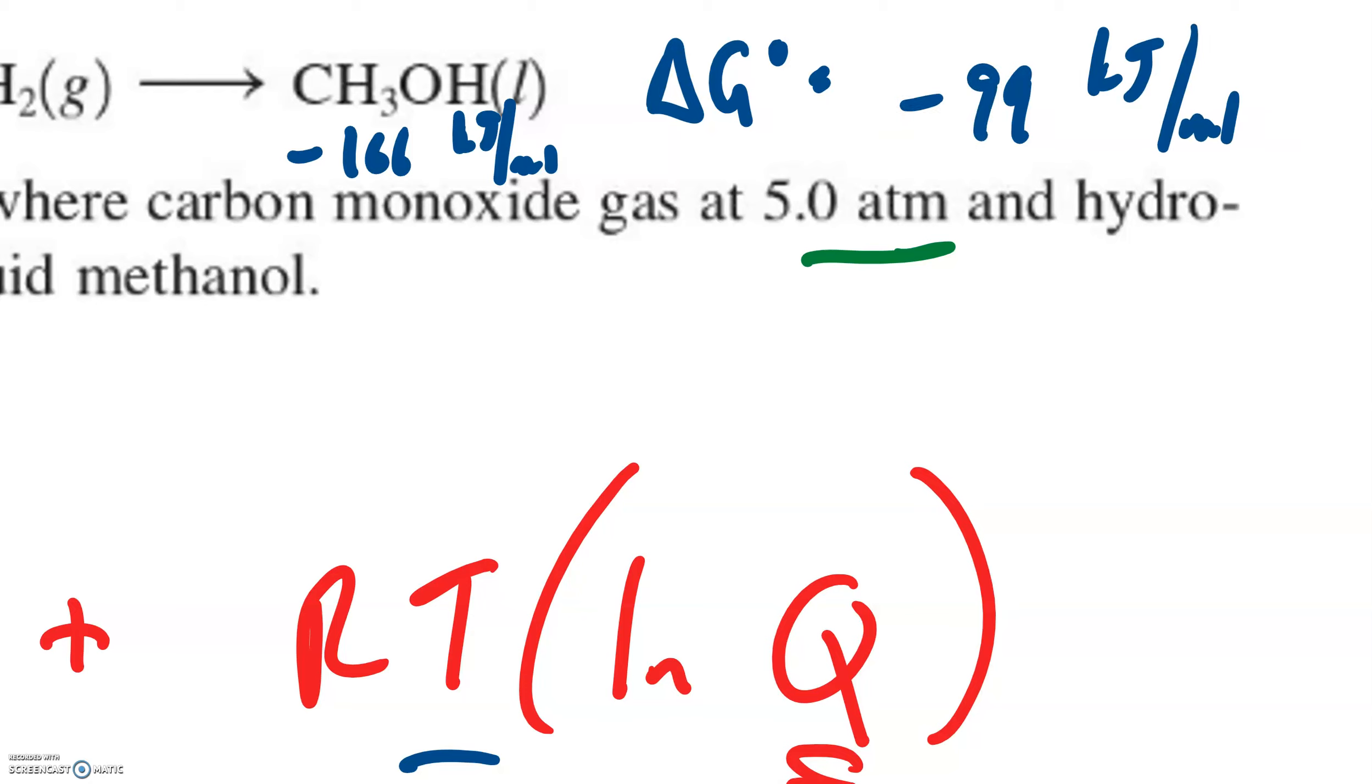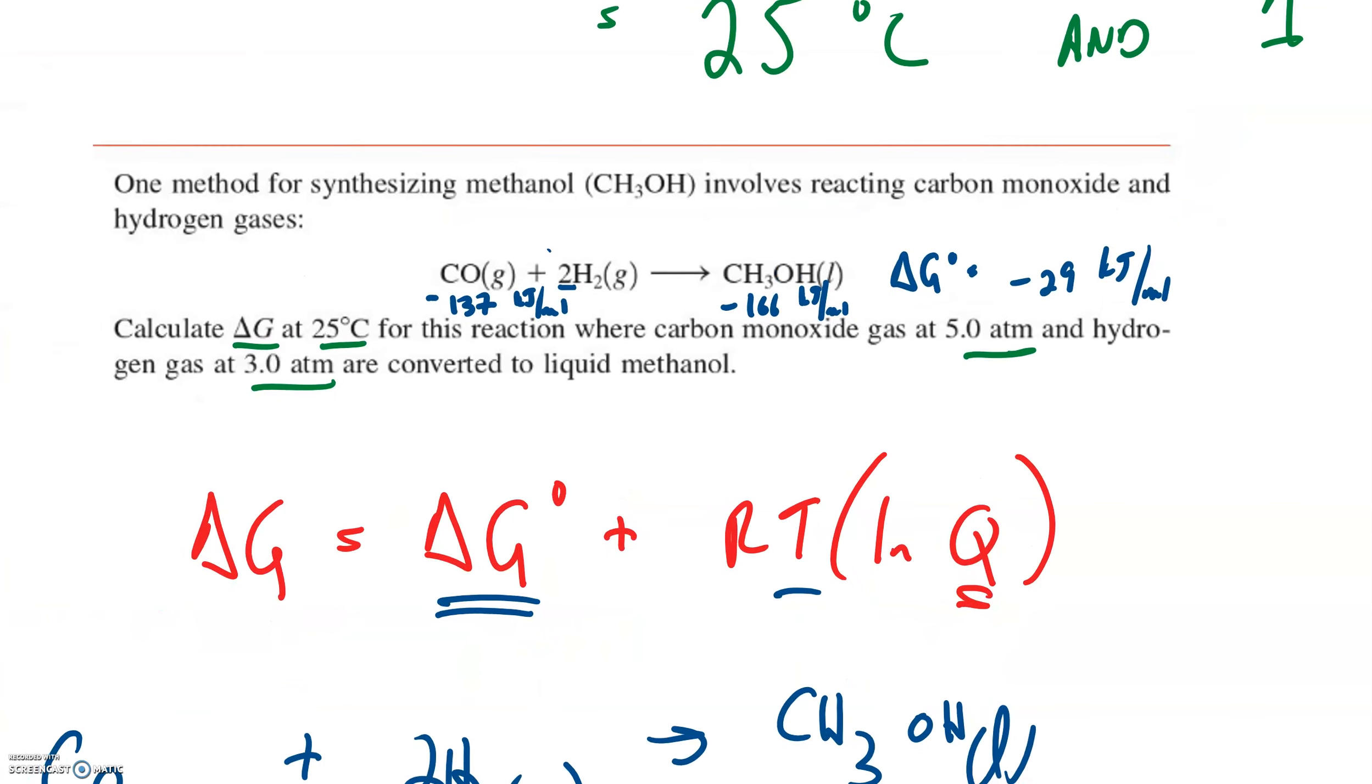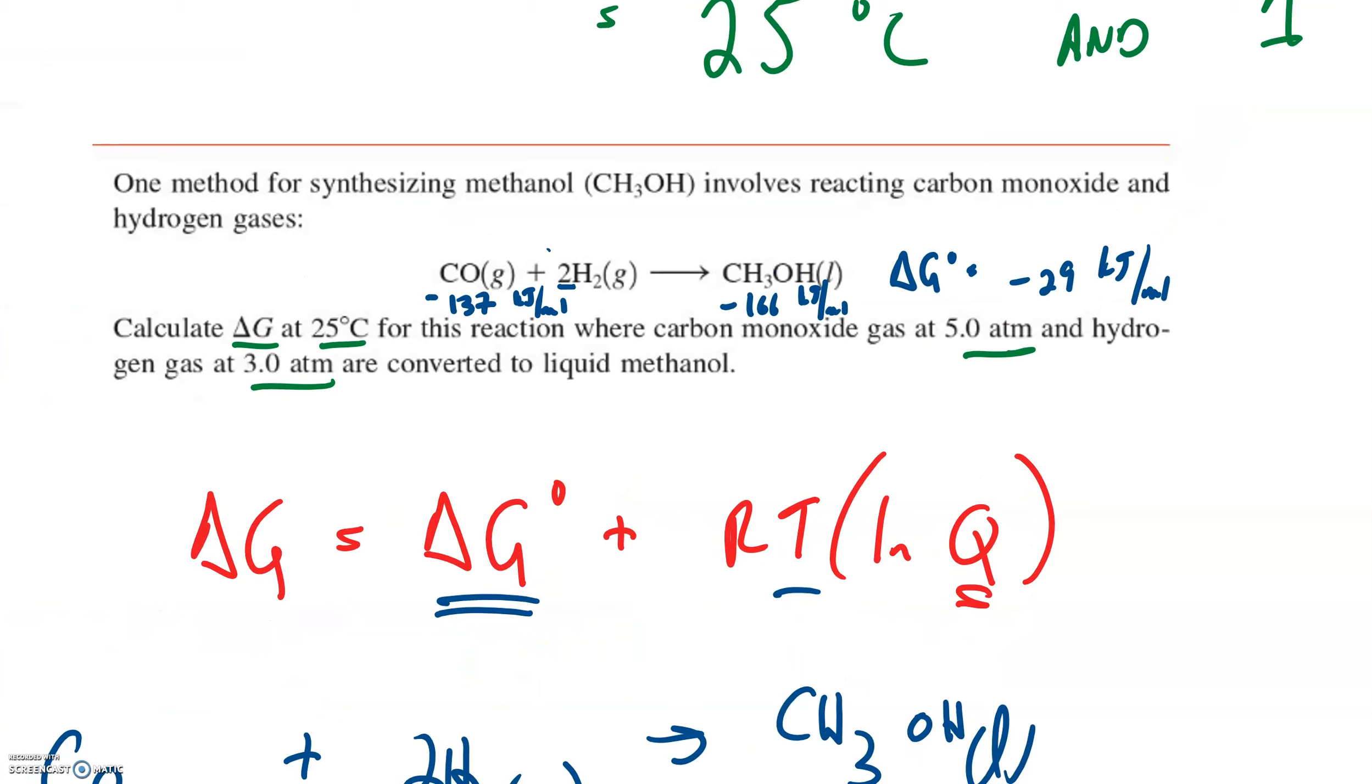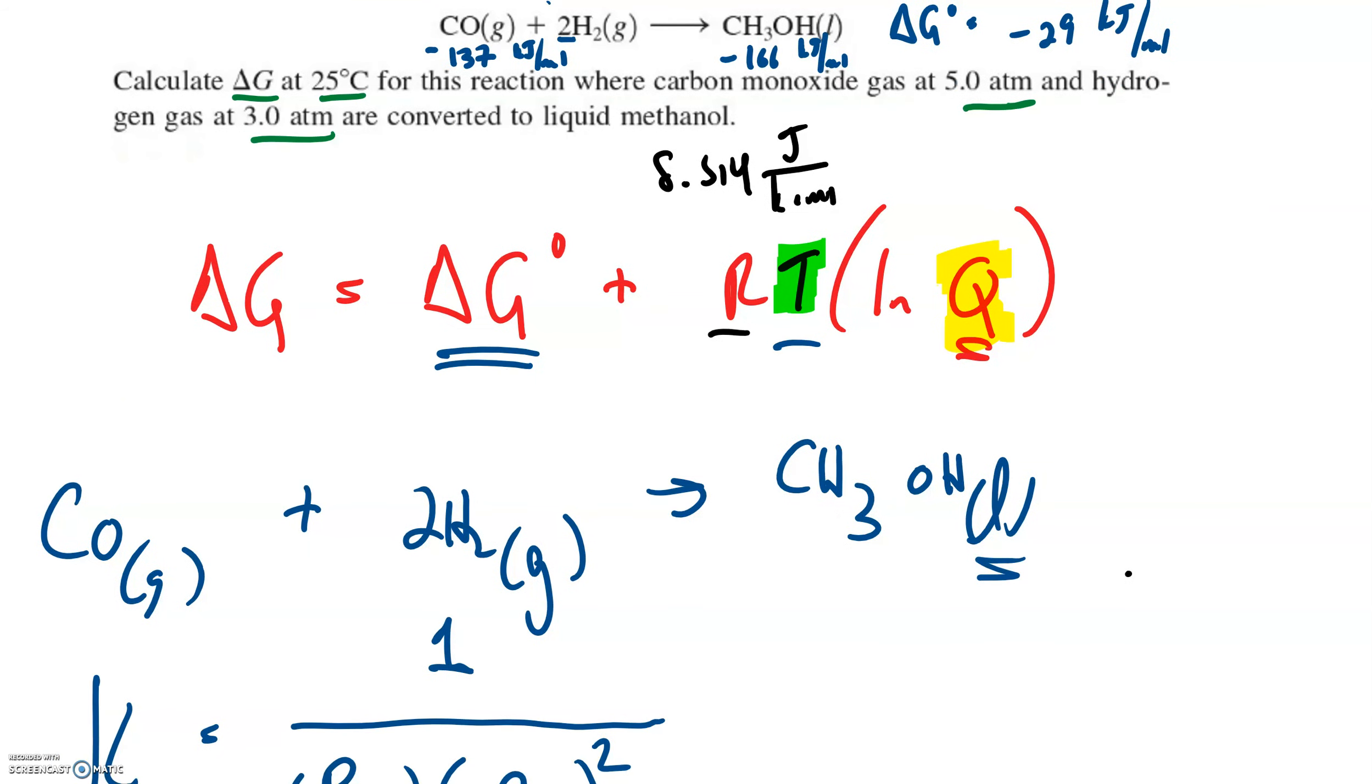What we want to know is if we start messing with the temperature and the pressure, or Q, the equilibrium position, does that change our spontaneity? Let's plug some stuff in. We know the temperature is 25 degrees Celsius. We calculated Q. What about this guy R? Do we remember R? 8.314 joules over kelvin moles. So we have everything that we need. Let's plug this stuff in.